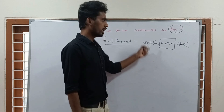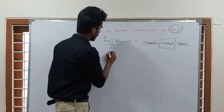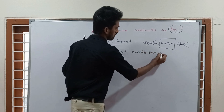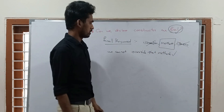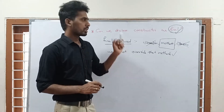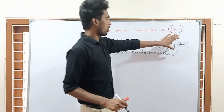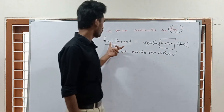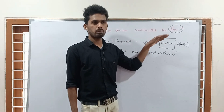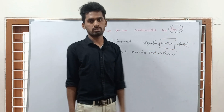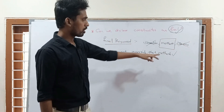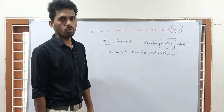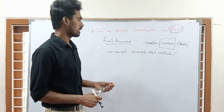If you use the final keyword for a class, we cannot inherit that class. So the main use of the final keyword is to keep some restrictions on variables, methods, and classes. If you use the final keyword for a method, we are restricting it from overriding.